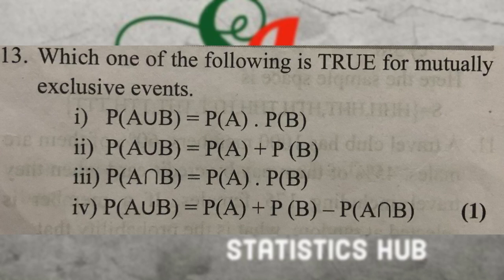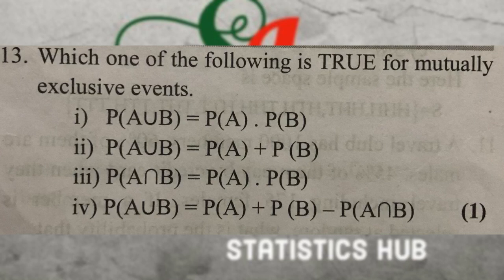Which one of the following is true for mutually exclusive events? For mutually exclusive events, P of A intersection B is equal to zero. The addition theorem formula: P of A union B is equal to P of A plus P of B, since P of A and B equals zero for mutually exclusive events. Also, P of A union B equals P of A plus P of B minus P of A and B in the general case.